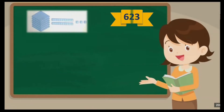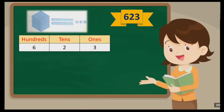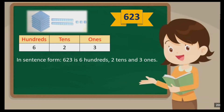Here is another example. The total is six hundred and twenty-three. You can see that the digit 3 is in the ones place, the digit 2 is in the tens place, and the digit 6 is in the hundreds place. In sentence form: 6 is in hundreds, 2 is in tens, and 3 is in ones.